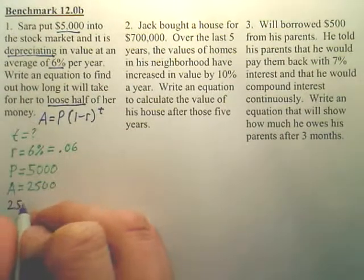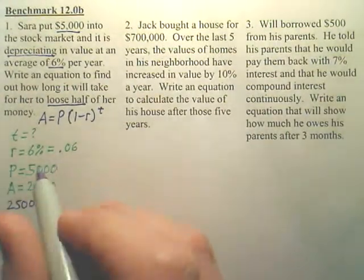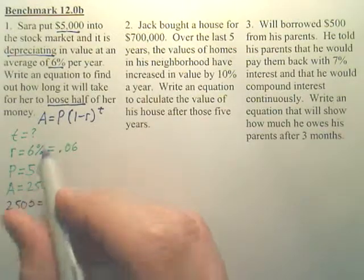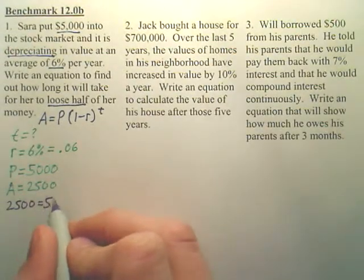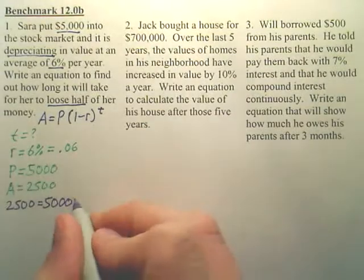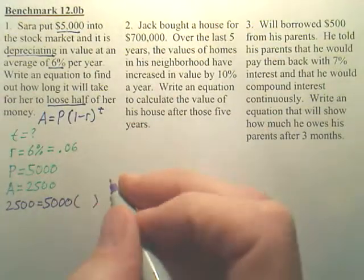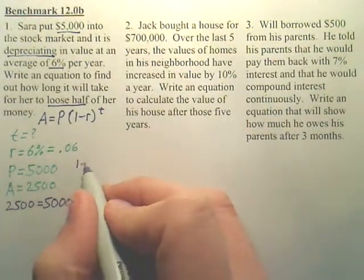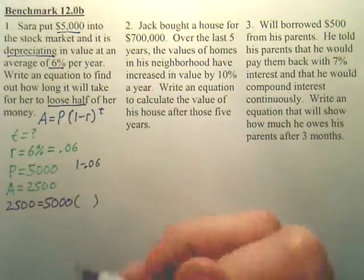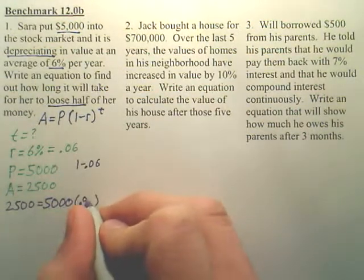A is 2,500. P is 5,000. 1 minus R. Well, R is 0.06. So 1 minus 0.06 is 0.94.